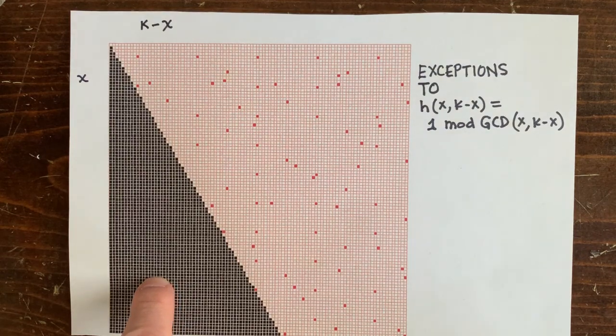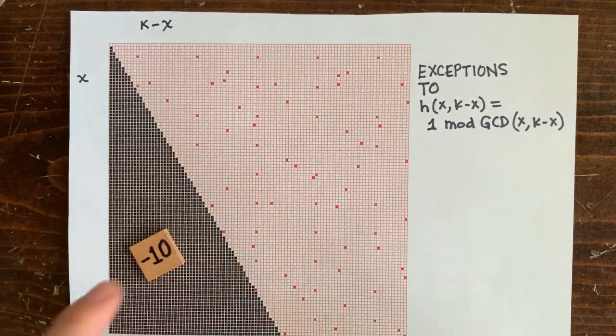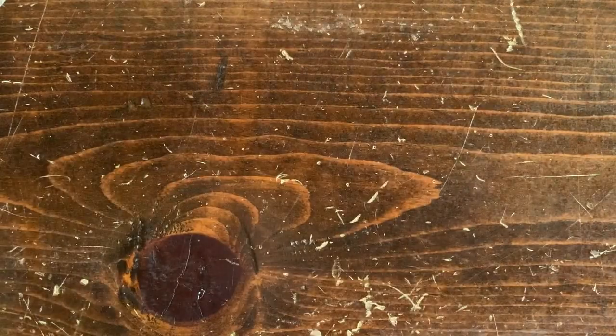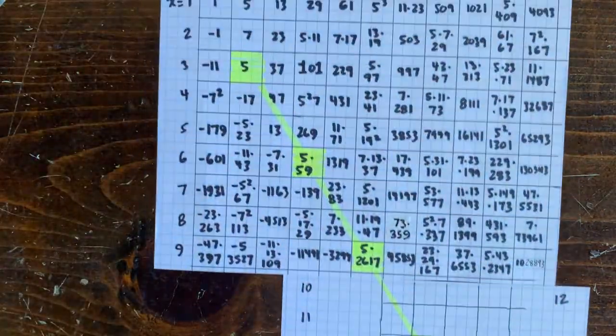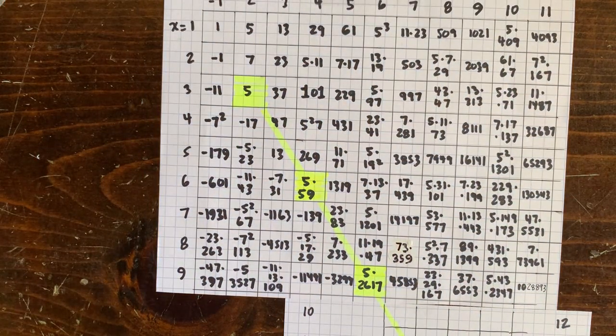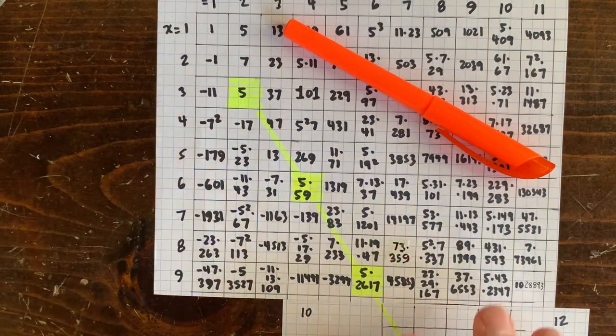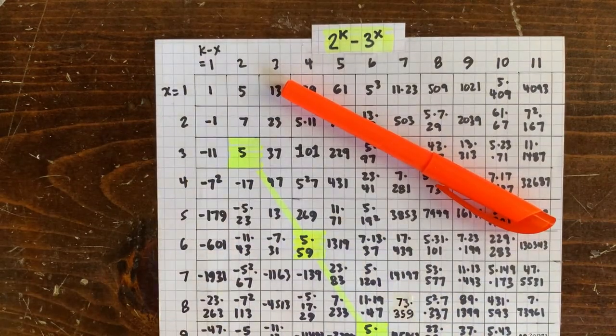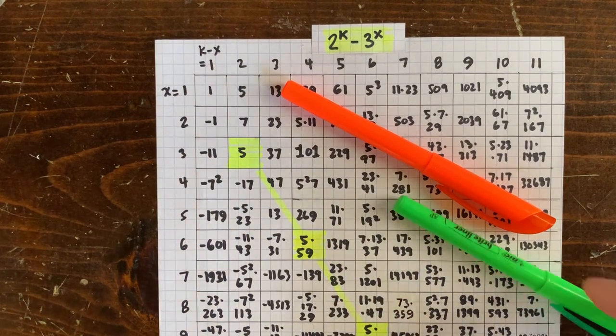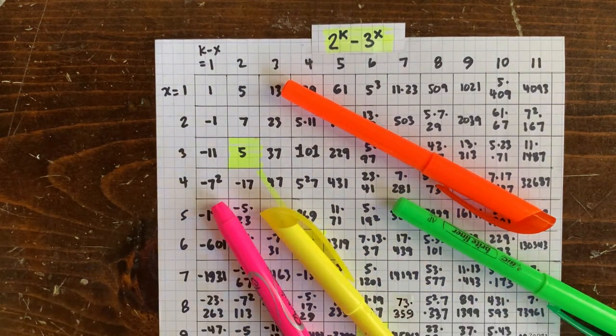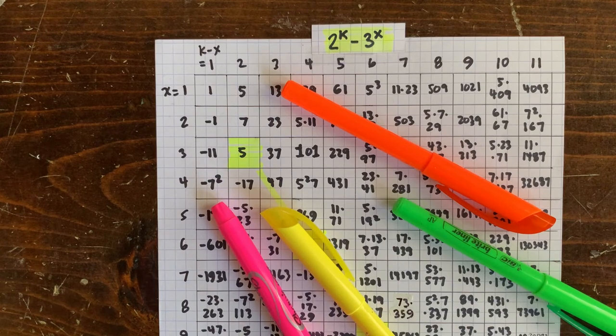So let's take a look at this orange ray of sunshine here. The 23 at x equals 2, k minus x equals 3 gets inherited here and here and infinitely more places along this infinite ray of sunshine. That means there's an infinite number of rays throughout this chart, each one starting at a place where x and k minus x are co-prime...